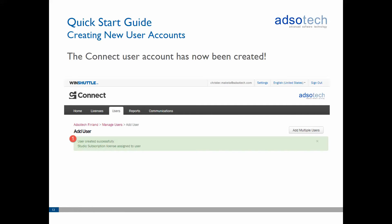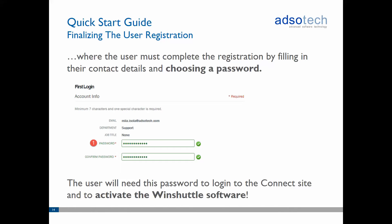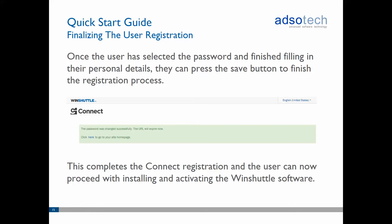The user account has now been created in Connect. Then, just like with the admin account, the new user will receive an email message with a registration page link which they must use to complete the registration process. The user must fill in their personal details and select a password on the registration page. Once the registration form has been filled in, pressing the Save button will complete the registration process and the account will be ready to use.